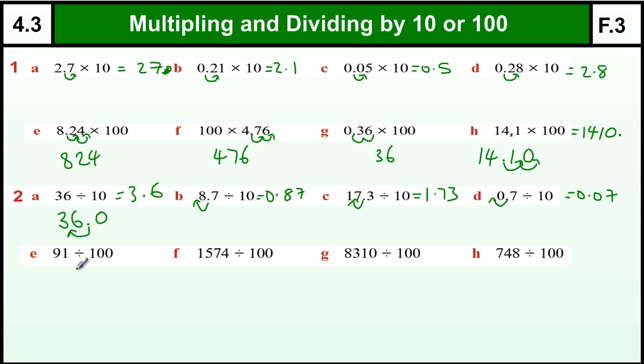Dividing by 100 moves it two places. So the decimal point on 91, 91.0, jumps one, two places to the left to make it smaller. It gives me 0.91. And 0, but we don't write the 0 on the end of a decimal.